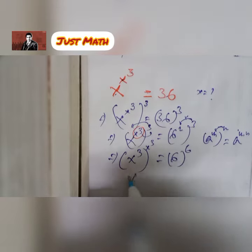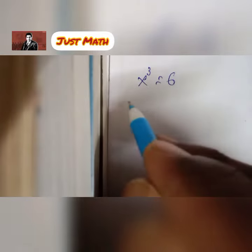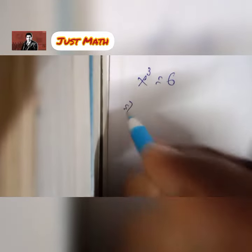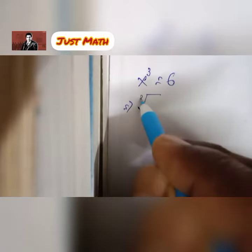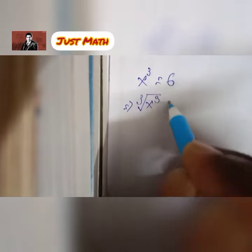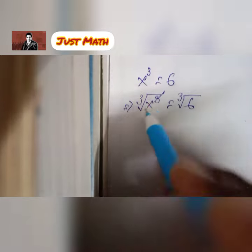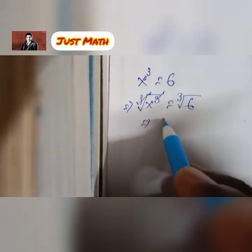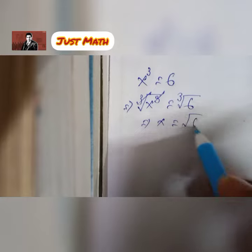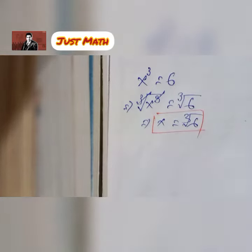So x cube equals 6. Making both sides cube root, I get cube root of x cube equals cube root of 6. Therefore x equals cube root of 6 — that is the final answer.